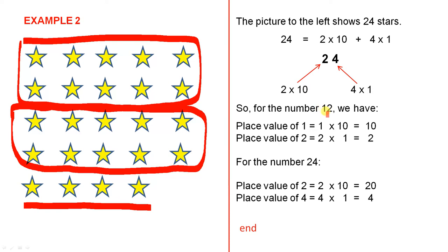So for the number 12 that we saw on the previous slide, the place value of one—what does the one actually mean? It means one times 10, which is 10. What does the two mean? That is the place value of two, which is that two there. Two times one equals two. So the one means one times 10, and the two means two times one. For the number 24, which we've seen here, the place value of two equals two times 10, which is 20. 10, 20. And the place value of the four equals four times one equals four.